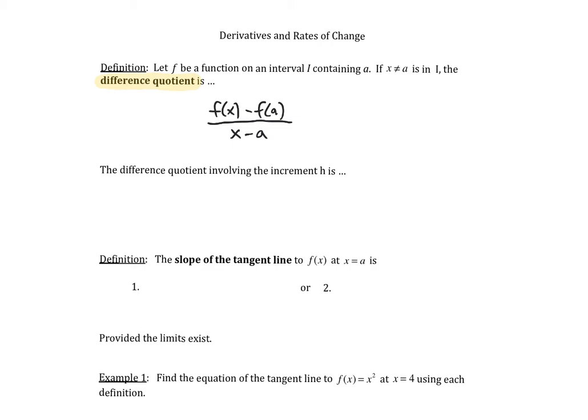When you see this, you should immediately think this is like the slope of the secant line connecting x and a, or really, it's connecting the points (a, f(a)) and (x, f(x)).